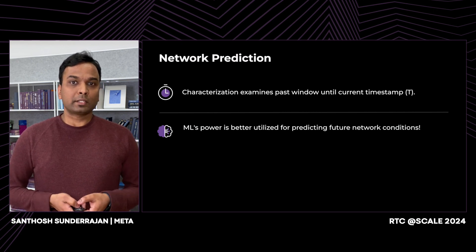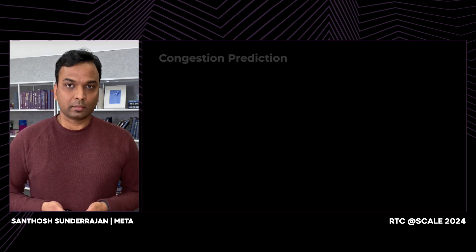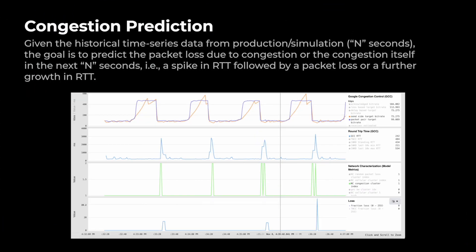Let's go deeper into the problem of predicting congestion. Given historical time-series data from production or simulation for n seconds, the goal is to predict packet loss due to congestion, or packet loss itself, in the next n seconds — that is, a spike in RTT followed by packet loss or further growth in RTT. This covers both shallow and deep buffers: shallow buffers cause packet loss during congestion, while deep buffers cause an increase in RTT.